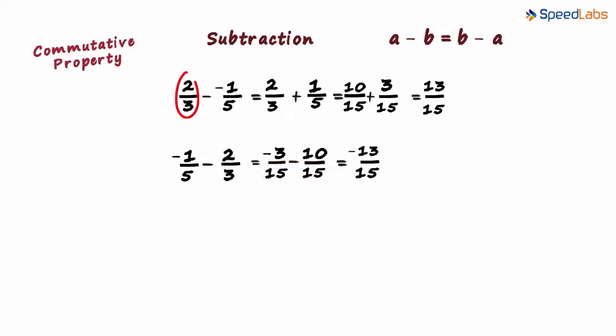So we can see 2 by 3 minus minus 1 by 5 does not equal minus 1 by 5 minus 2 by 3. So this property is never satisfied for subtraction of two different rational numbers.